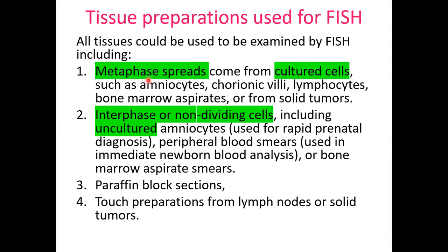For tissue preparation in FISH, we can use metaphase spreads where the chromosomes are distinct — obtained during cell division. Sources include amniocytes, chorionic villi, blood leukocytes, bone marrow aspirates, or solid tissue biopsies. Interphase or non-dividing cells are also used — interphase nuclei — for rapid prenatal diagnosis, peripheral blood smears, newborn blood analysis, and bone marrow aspirates.